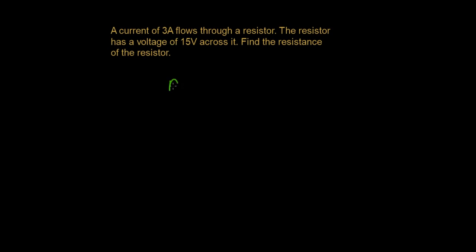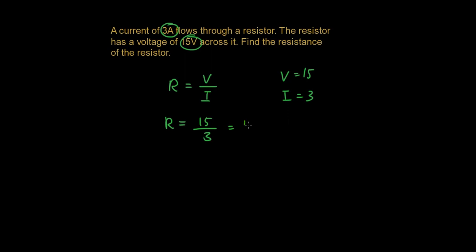If you remember the equation, R equals V over I. So R is equal to 15 divided by 3 — because V is equal to 15 and the current is equal to 3. So 15 divided by 3 is 5, and the units for the resistor are written as the omega symbol, which is pronounced ohms. The person that this unit was named after was called Ohm. So the resistance is 5 ohms.